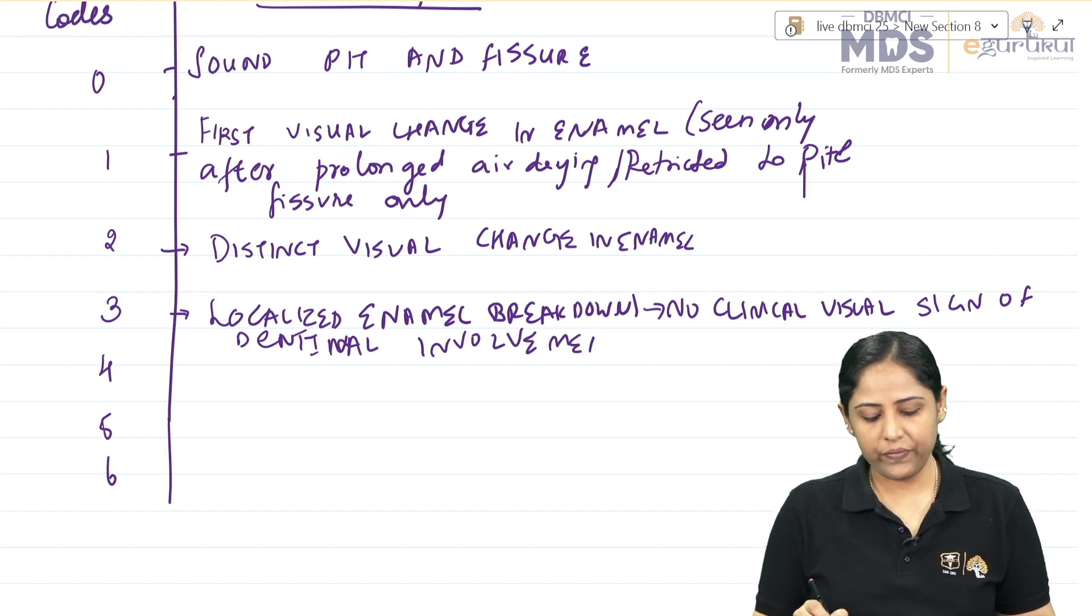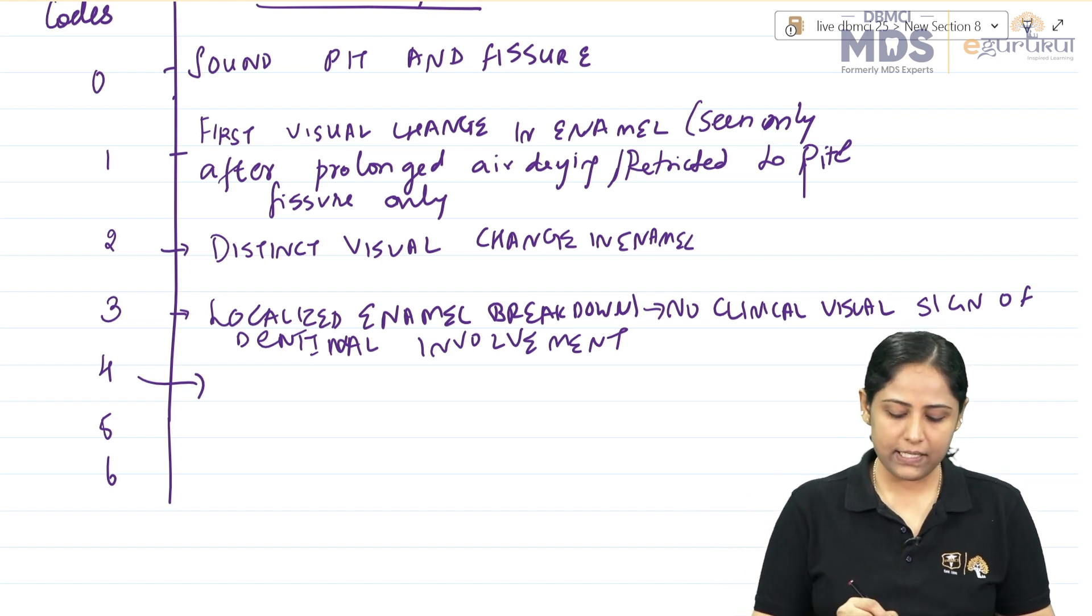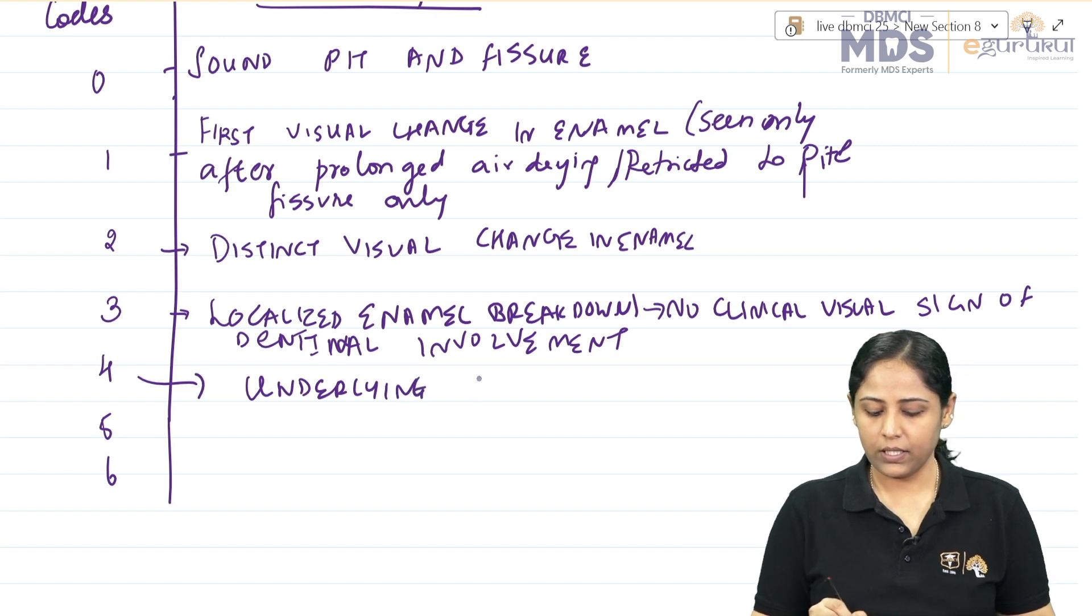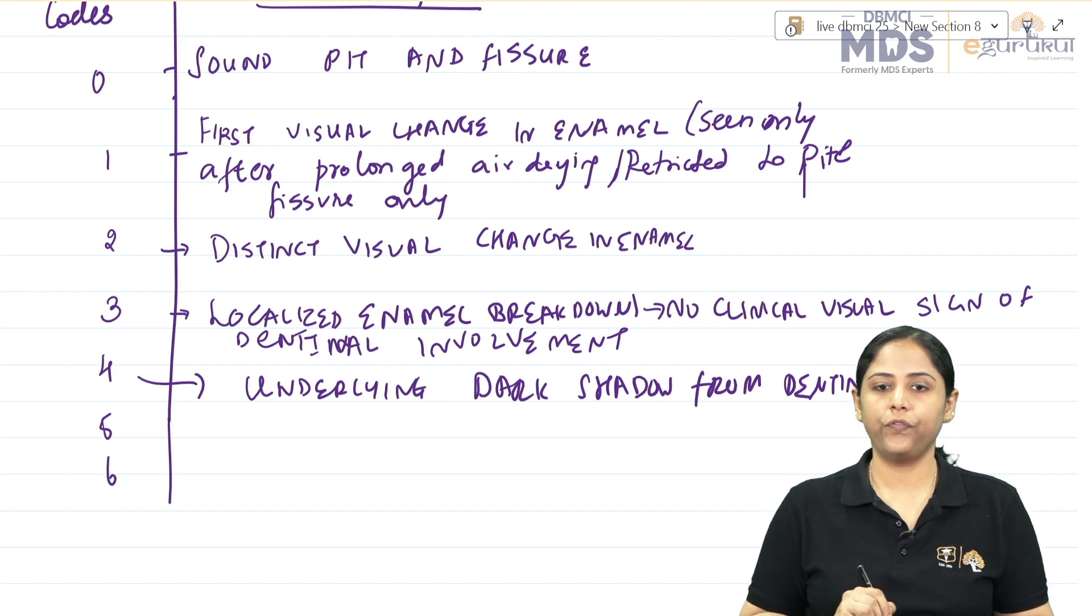Score 4 is underlying dark shadow from dentine.